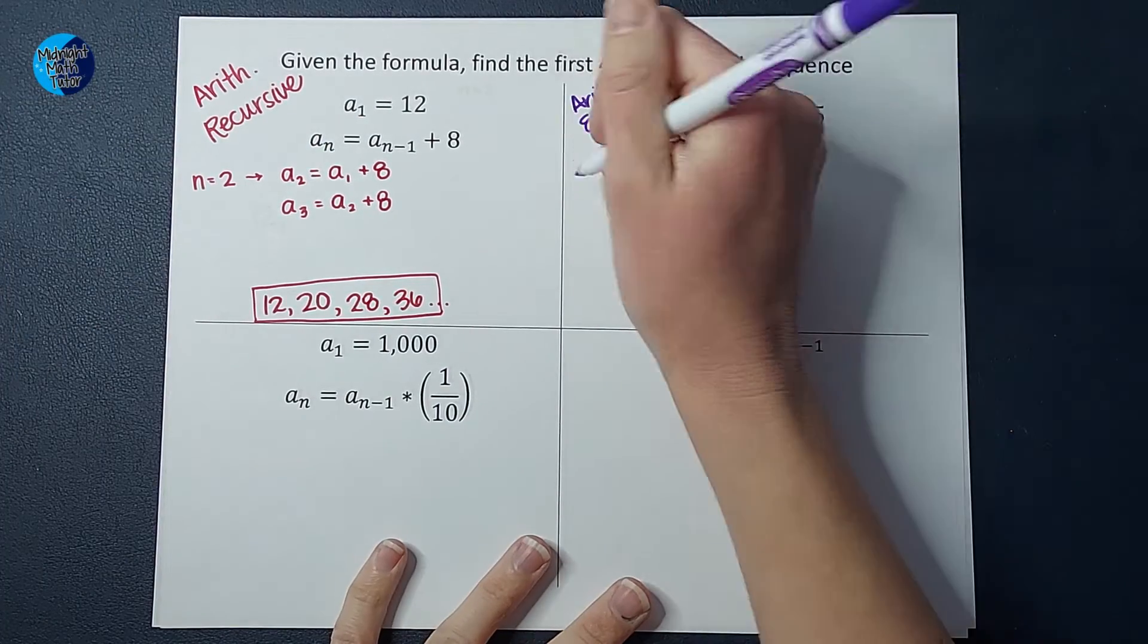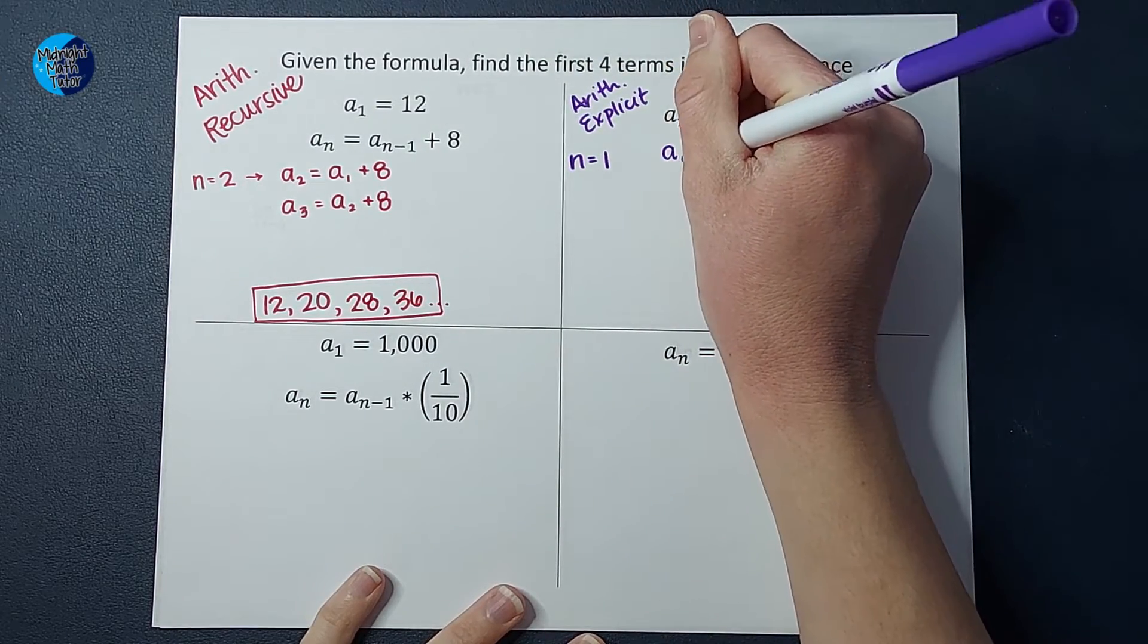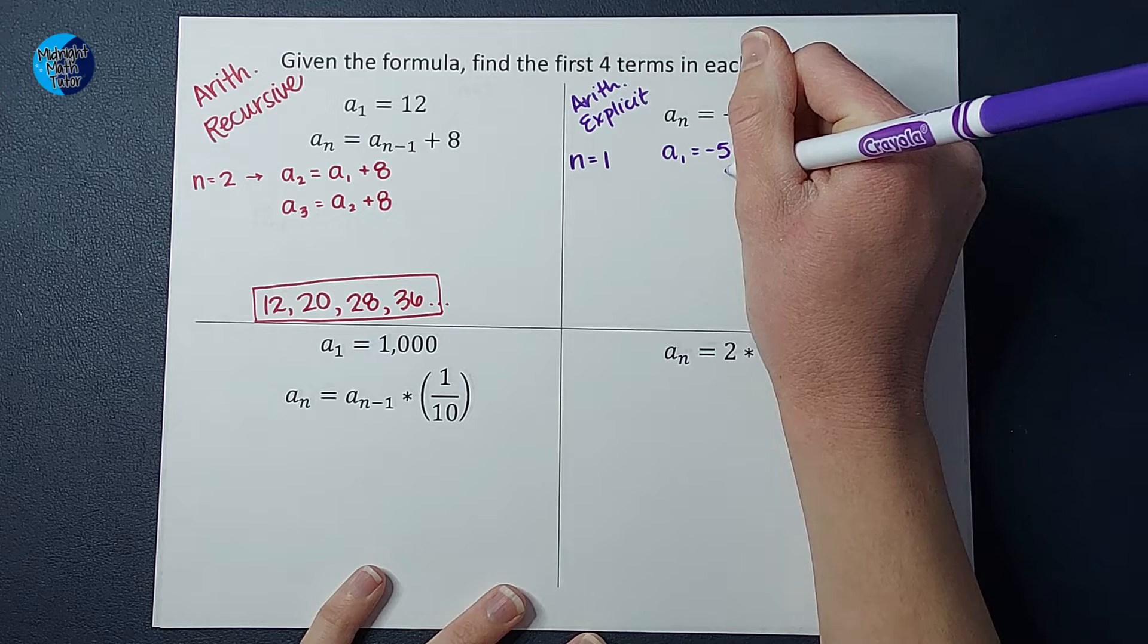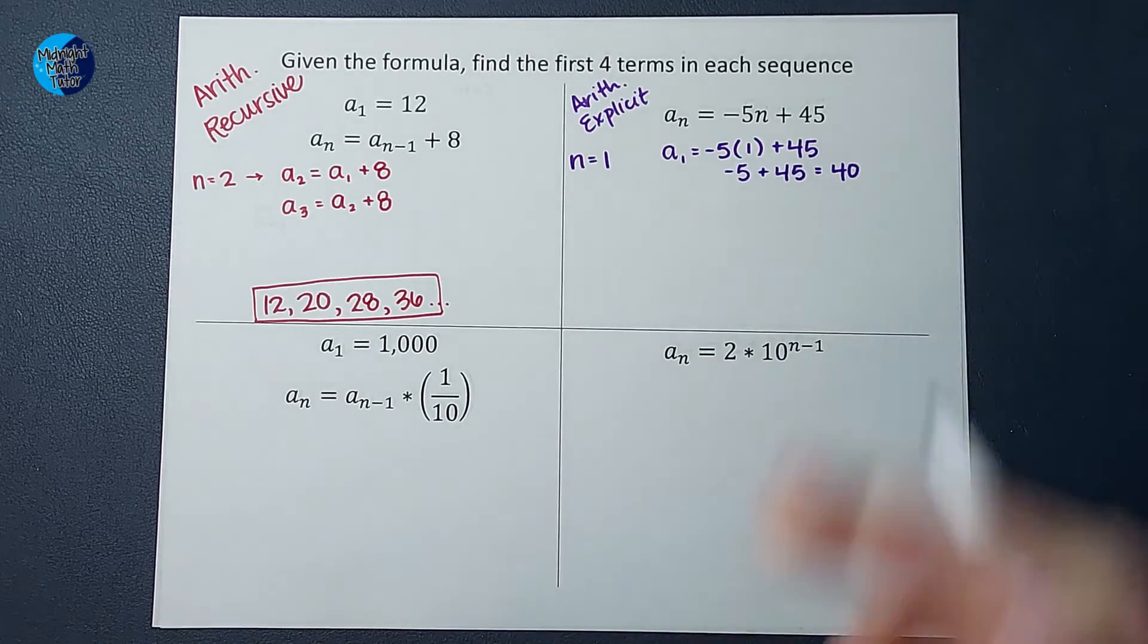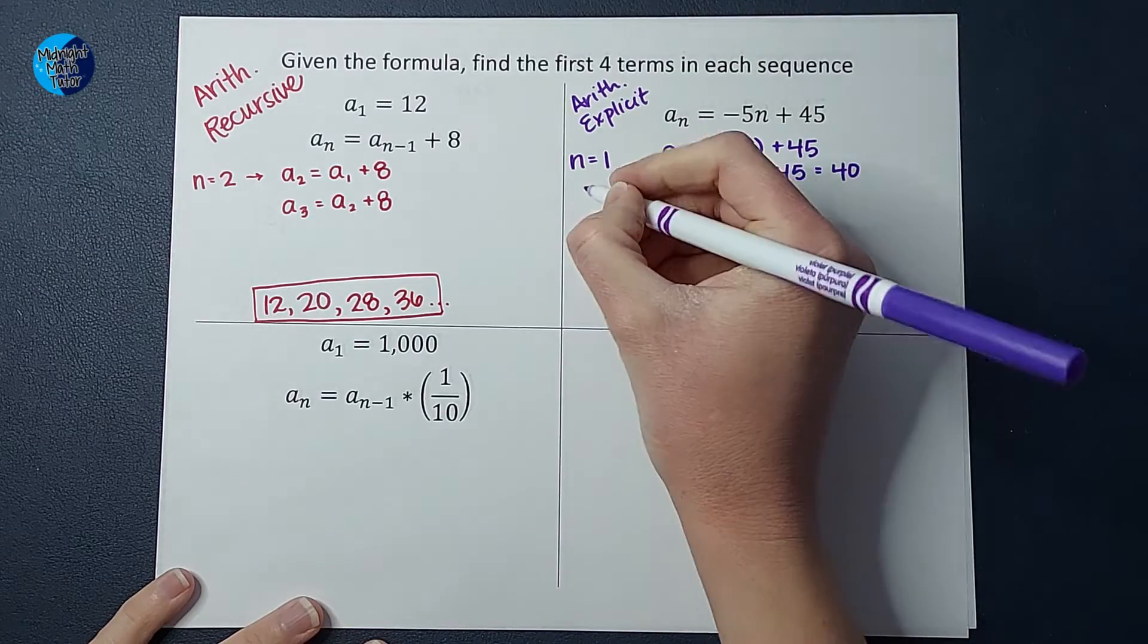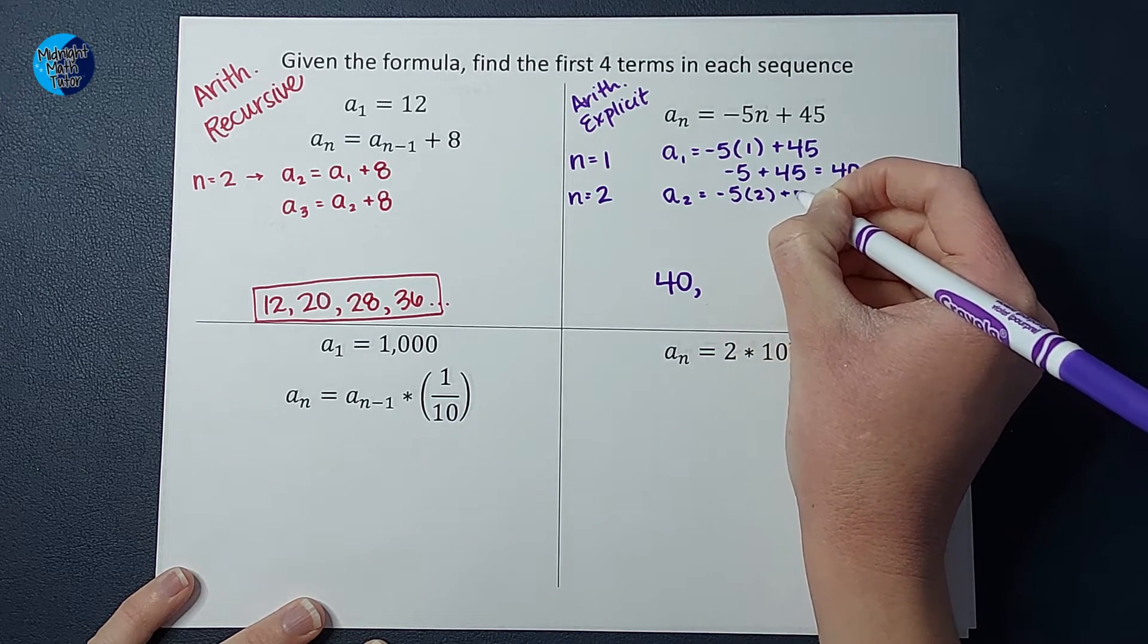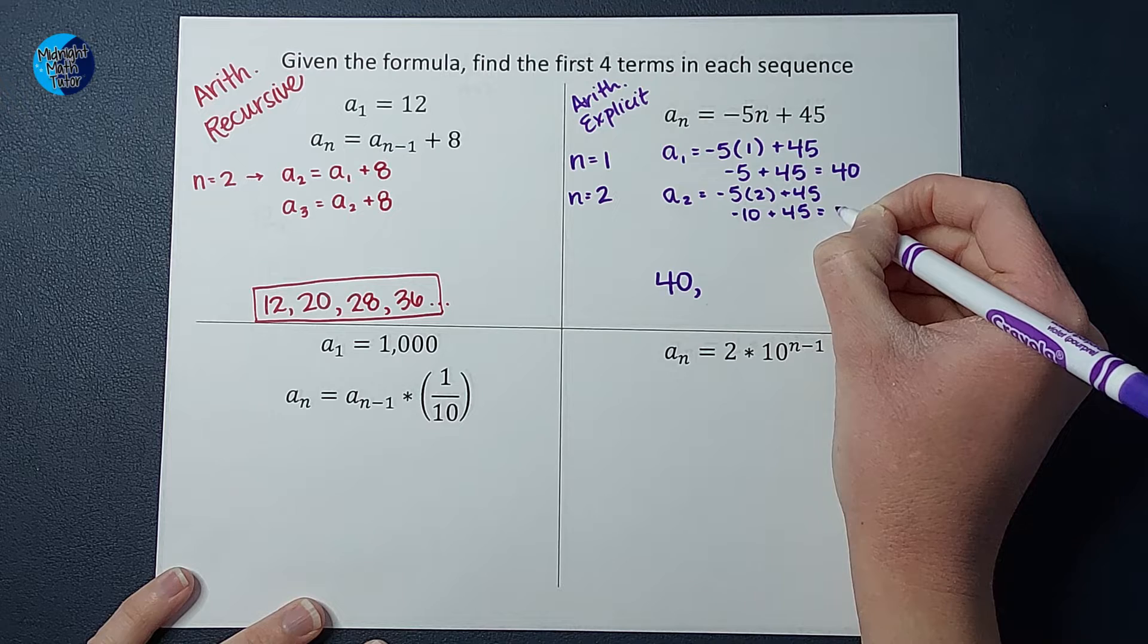To find the first term, I'm going to plug in 1 for n. So n equals 1. When I plug that in, I get a sub 1 equals negative 5 times n. We're plugging in 1 plus 45. So that ends up being negative 5 plus 45, which gives me 40. So the first term in this sequence is 40. To find the second one, I'm going to plug in 2 for n. A sub 2 equals negative 5 times 2 plus 45, which will end up being negative 10 plus 45, which gives me 35.